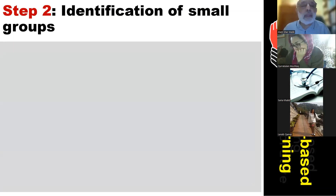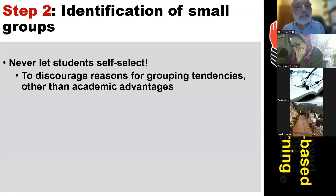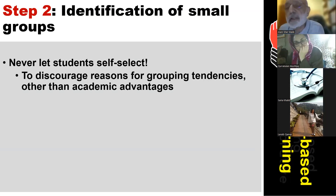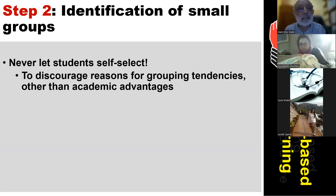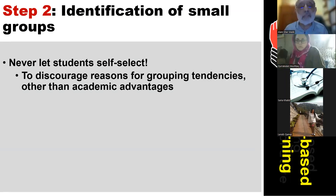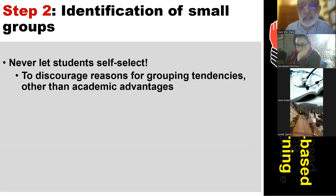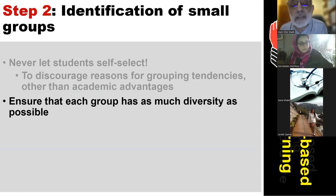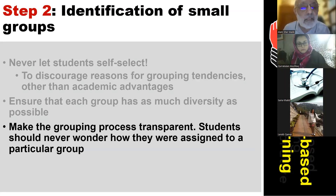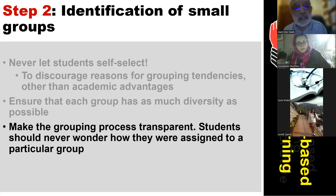The second step is identification of small groups. You should try not to let students form their own groups, as that can result in biased groups — perhaps many good students in one group and lower-performing students in another. Groups should be formed to discourage tendencies other than academic advantage. Ensure each group has as much diversity as possible, and make the grouping process transparent so students understand how and why they are assigned to a particular group.